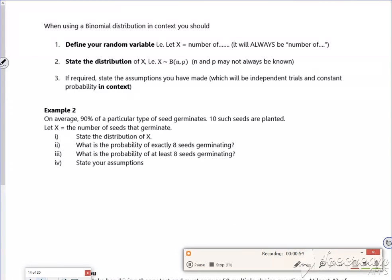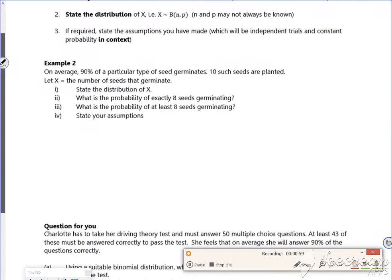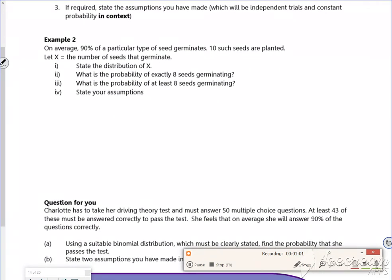Right then, so define it, state the distribution, and state any assumptions if needed. We don't really do the assumptions unless they tell us to. So it says on average 90% of a particular type of seed germinates, and 10 such seeds are planted. Let X equal the number of seeds germinated. So to state the distribution, it's X follows a binomial, there's 10 seeds, and a 90% chance of success. So 0.90 there.